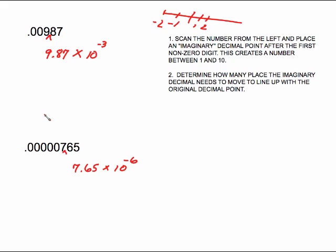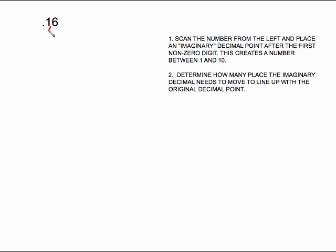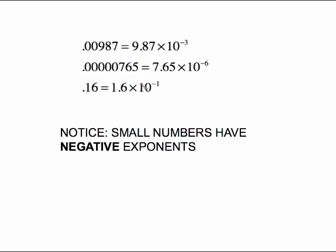Notice that small numbers like these have negative exponents. One last example: 0.16, scanning in from the left. There's my first non-zero digit — I put my imaginary decimal right there, and this is 1.6 times 10 to something. That imaginary decimal only has to move one place to the left to line up with the original decimal, so the answer is 1.6 times 10 to the negative one. All of these small numbers end up with negative exponents.